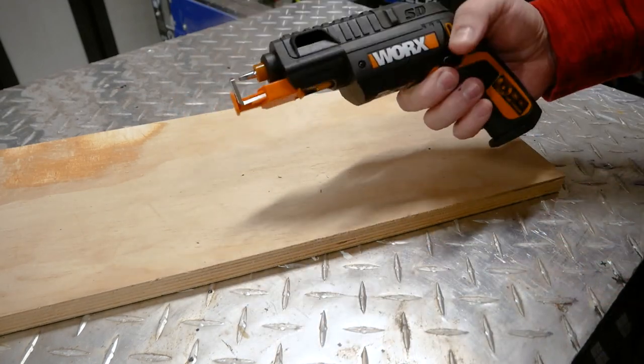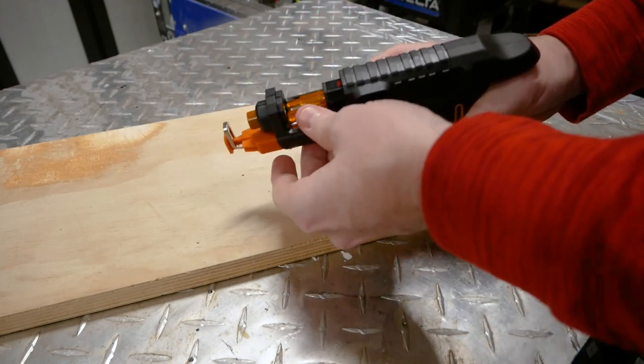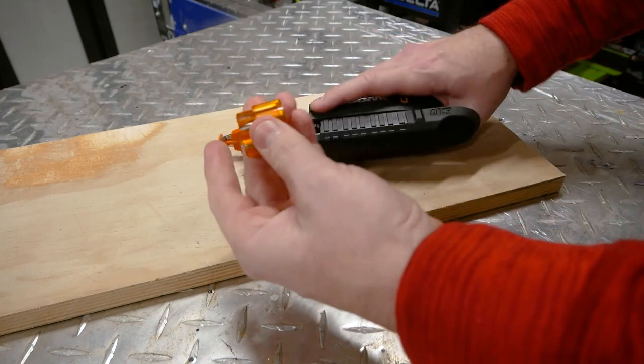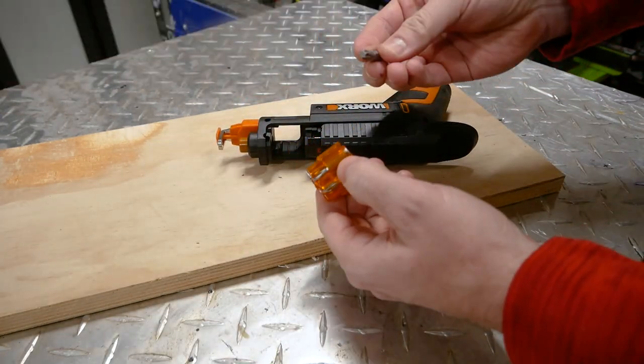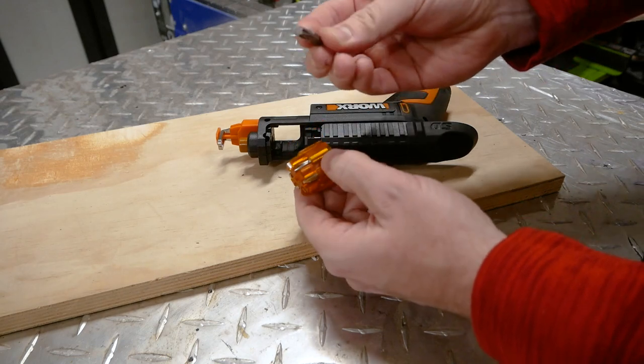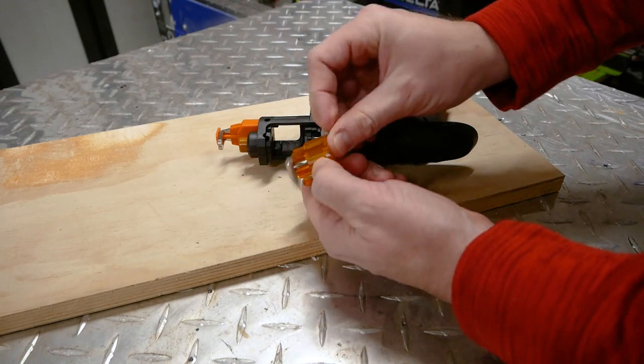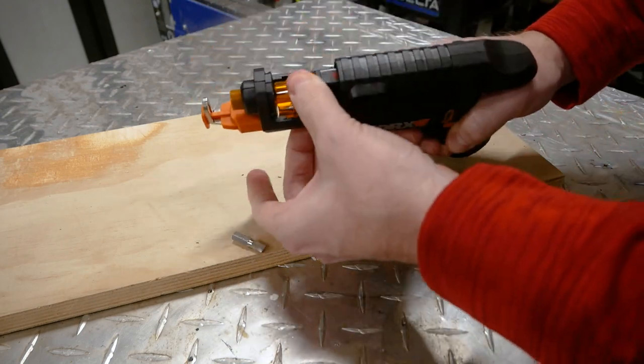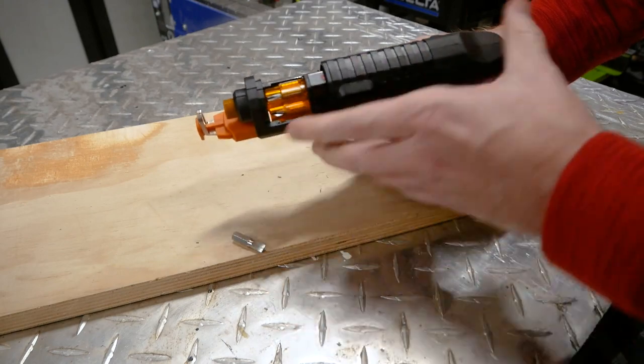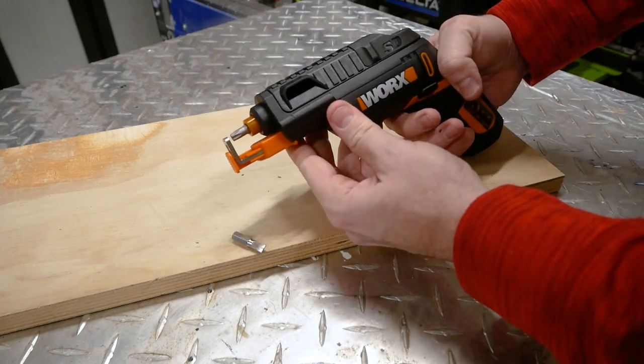It's really ergonomic to operate. Of course, let me show you a few other things here. You're not limited to what comes with it. It will actually take any standard quarter inch bit. Here's a T30 Torx. So just pop that out, put your magazine back in. Look at that. Now we've got our Torx bit right up front there.